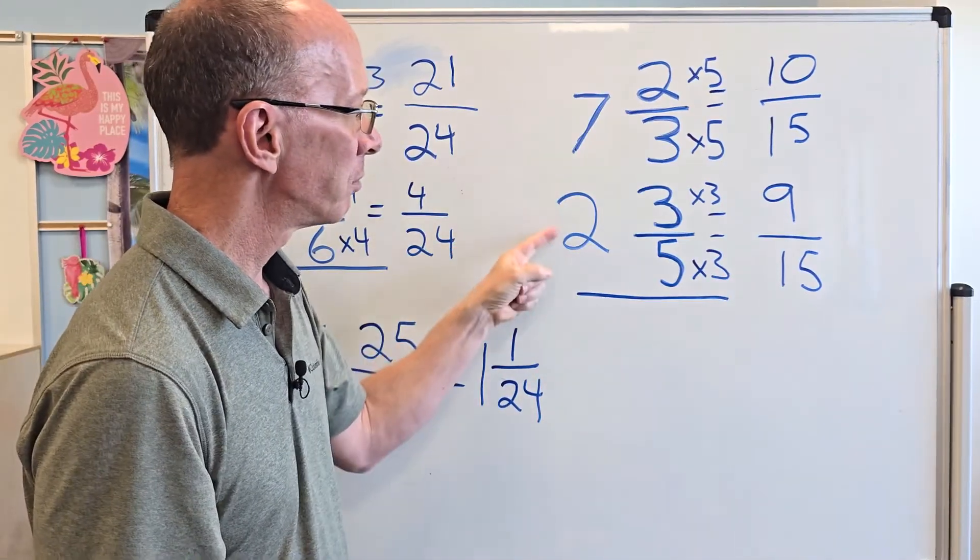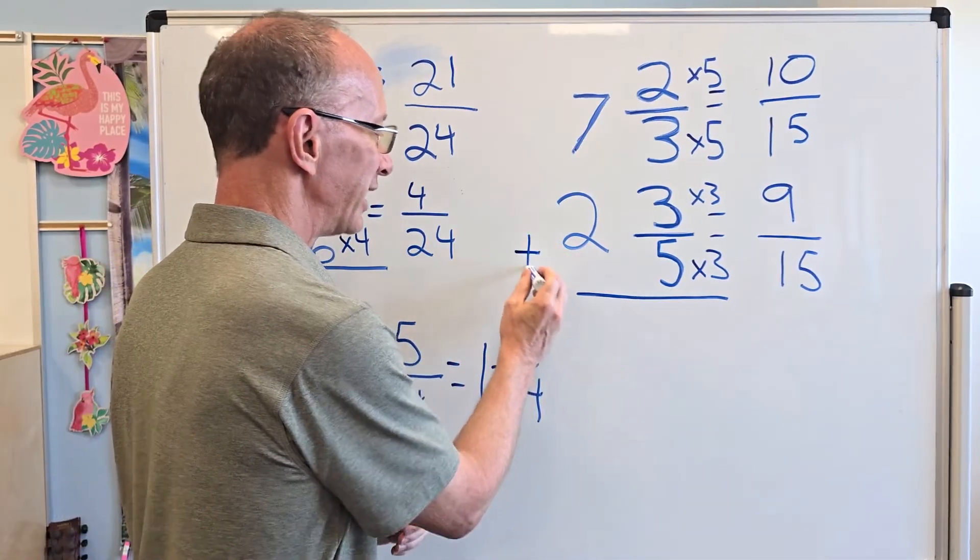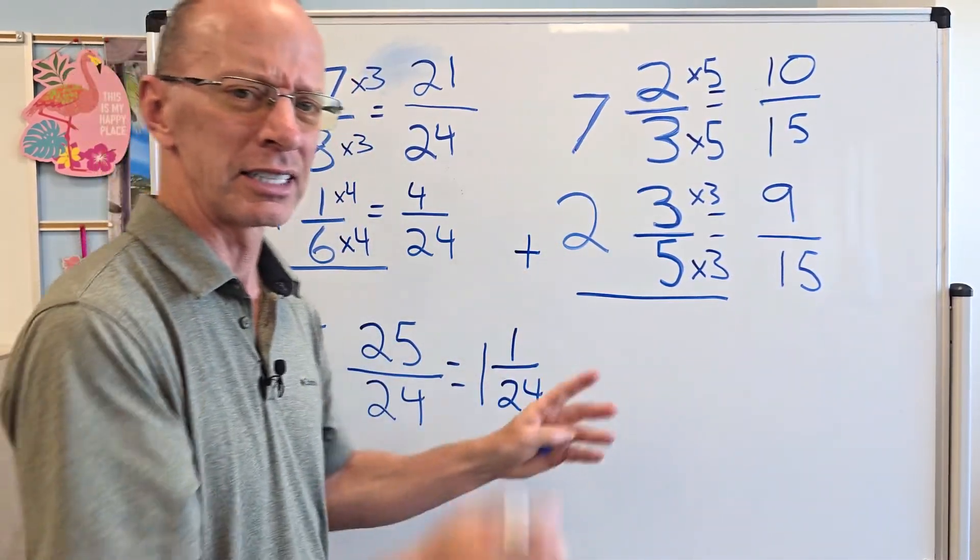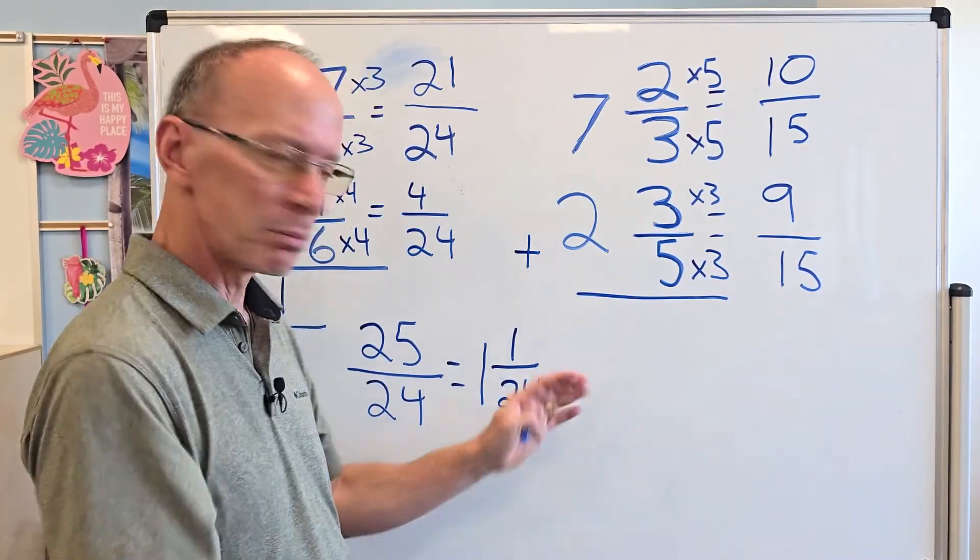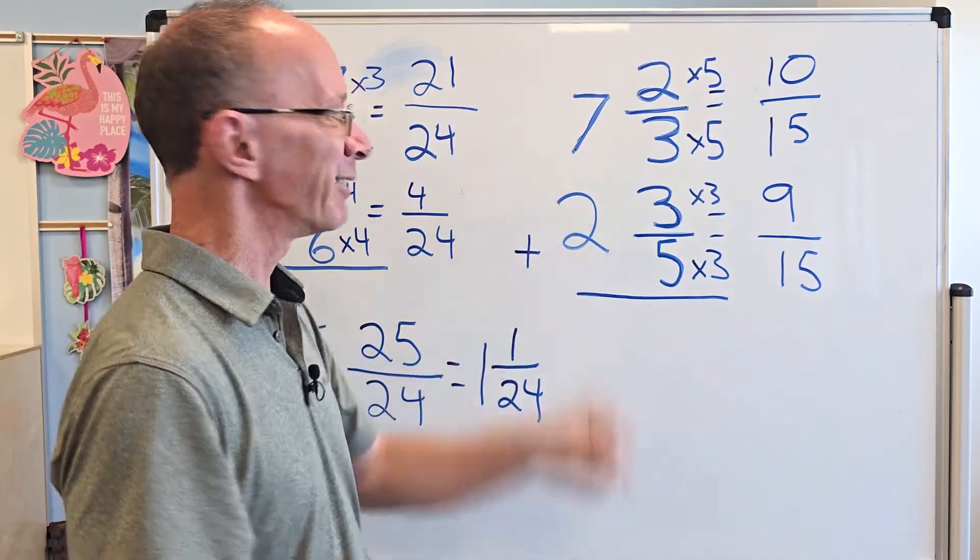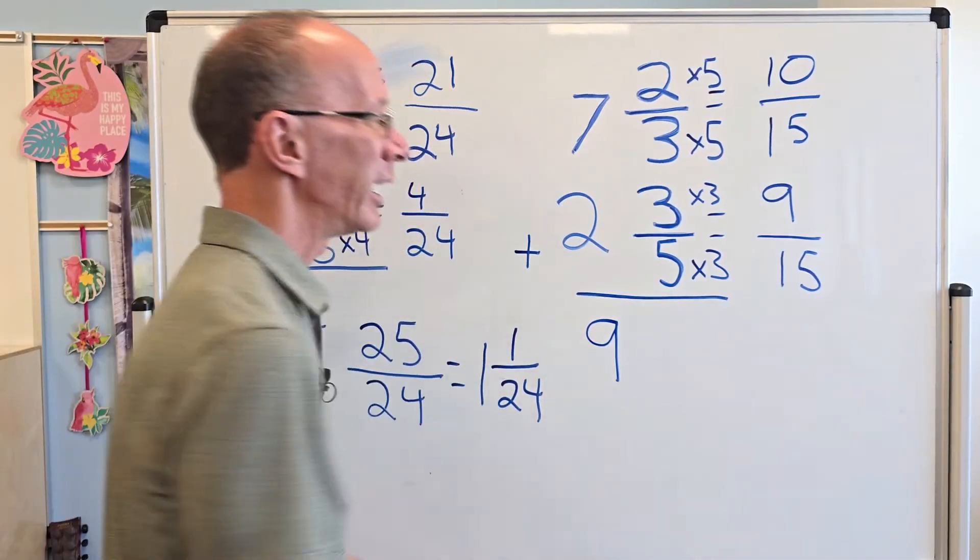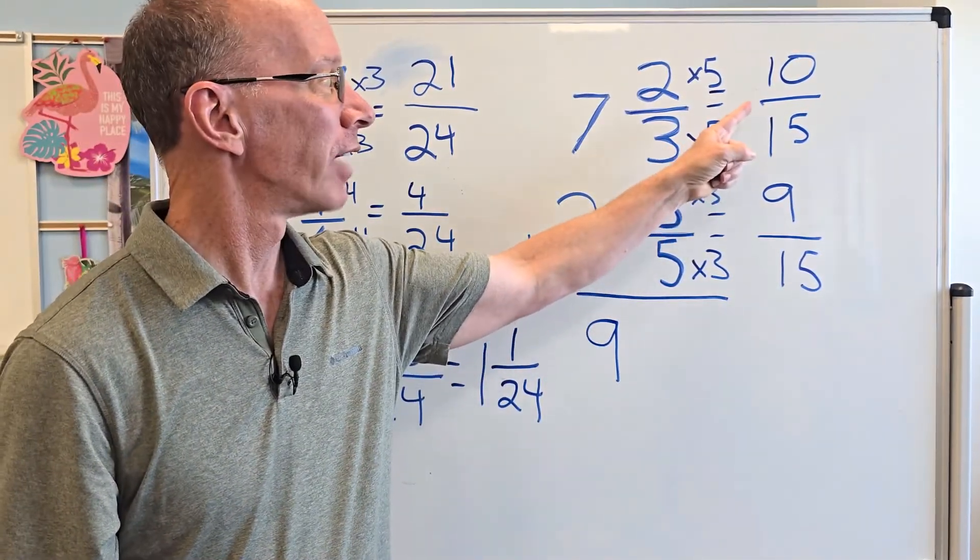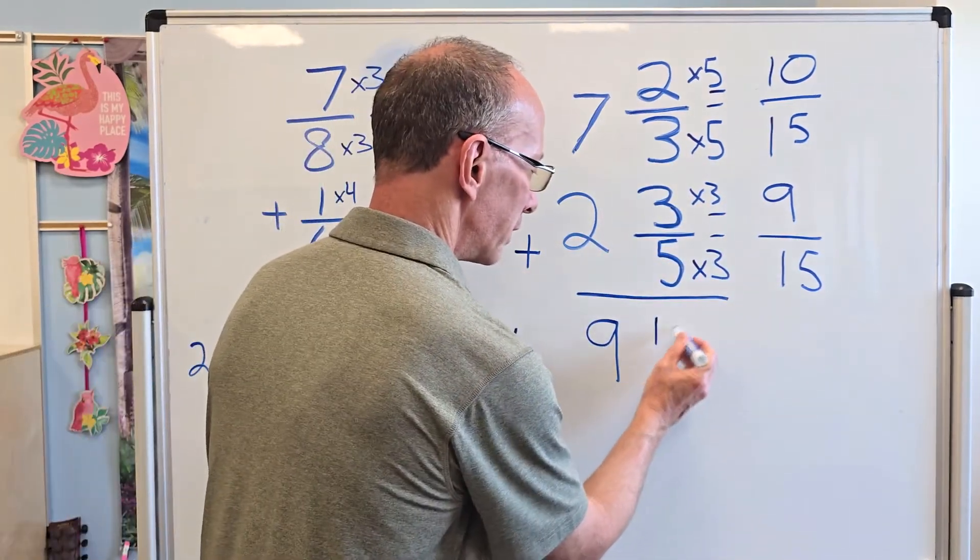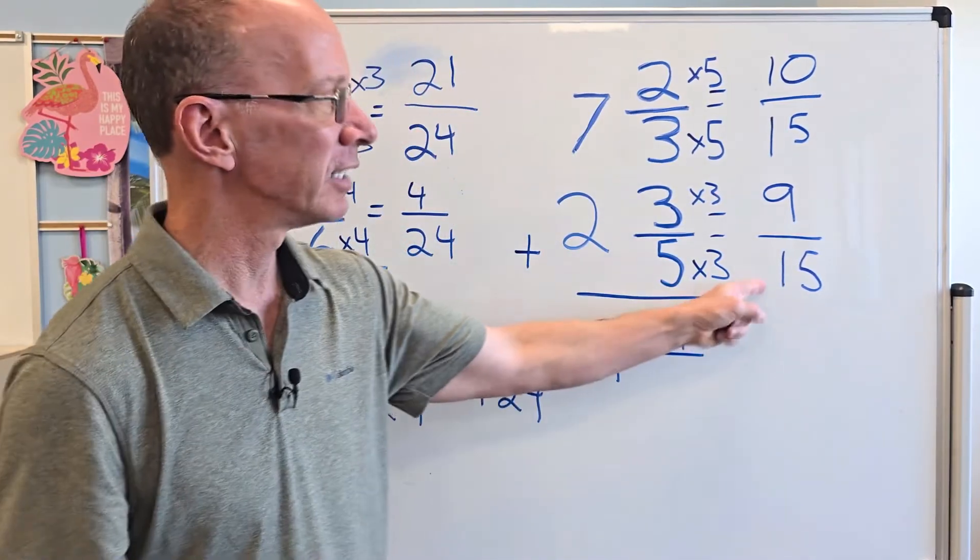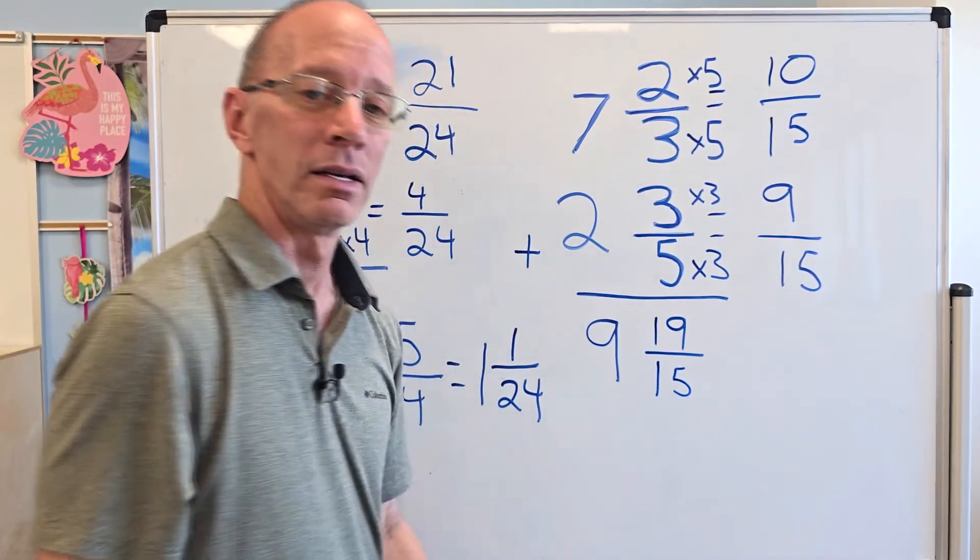So I have 10 fifteenths, 9 fifteenths. Now let's go ahead and add this. 7 plus 2. I apologize. I forgot to put the addition sign right there. You're like, well, is that subtraction or is that addition? Forgot to put it down. So pardon me on that one. But we're going to still move on. 7 plus 2 equals 9. So I'm going to put 9 right there. And then let's go ahead and add our fractions over here. 10 plus 9 equals 19 over our denominator, which stays the same, which would be 15.